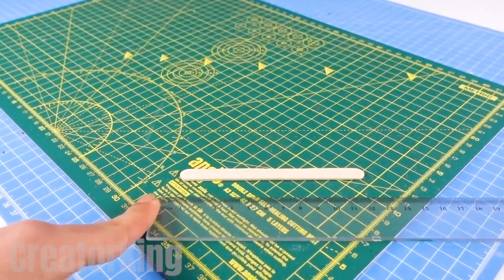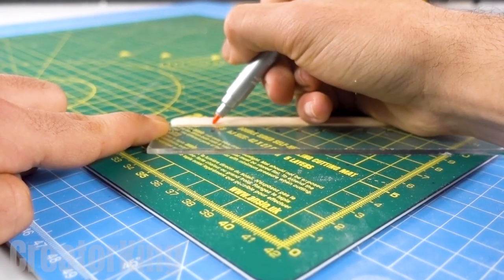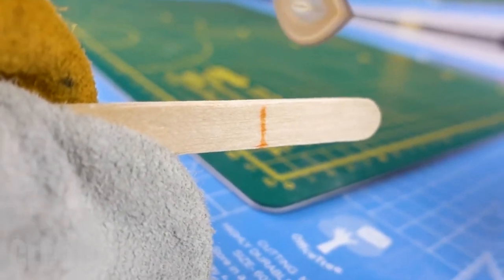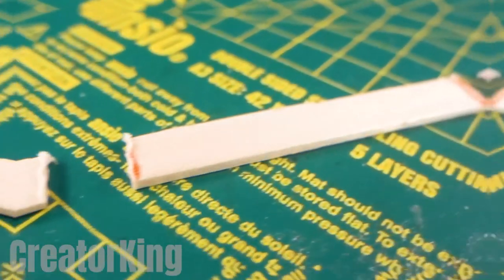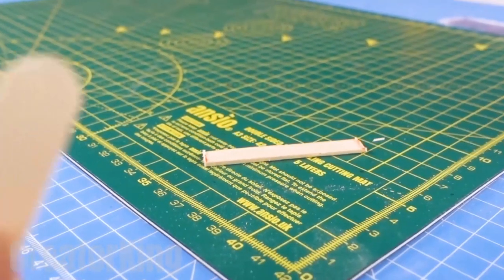Cut another popsicle stick or tongue depressor. We'll need the ends of these to glue together to make a v-shape like what you see on your screen. One side is going to be a little shorter than the other.